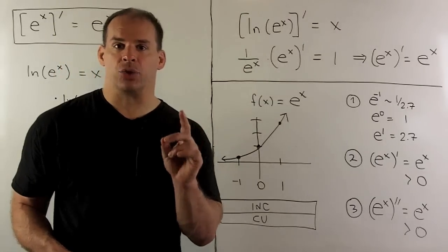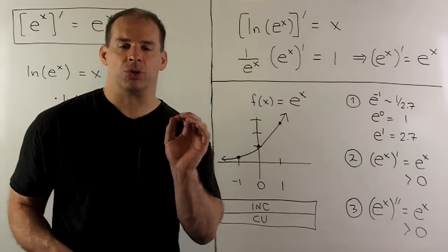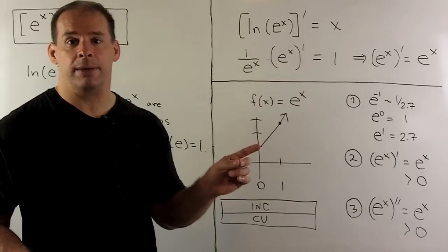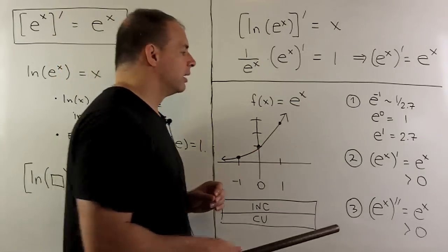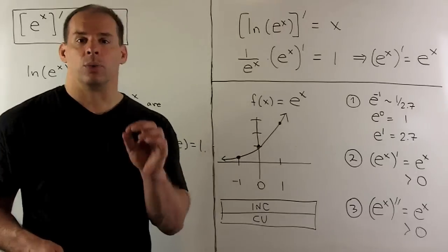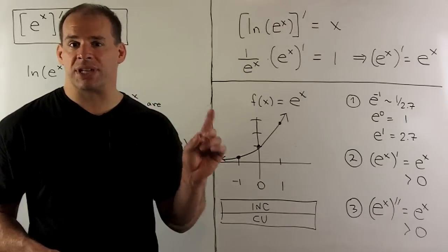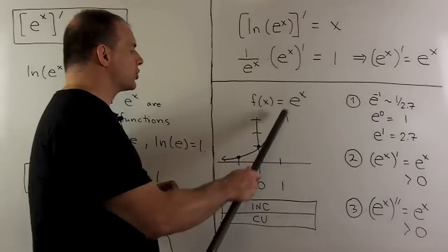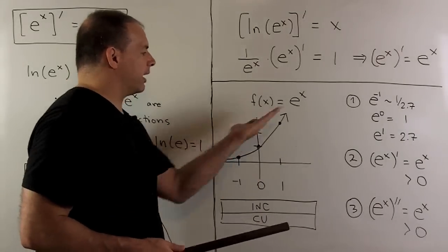If I take the second derivative, so we're going to take the derivative of e to the x, I get e to the x, and then I take the derivative again, I get e to the x. So, this is also always going to be positive. Where the second derivative is positive, our graph is concave up. So, we note our graph also has bowl facing up at every point.